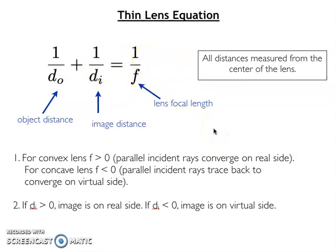For a convex lens, focal length will be greater than zero. For a concave lens, focal length will be less than zero. That is just something you need to memorize.